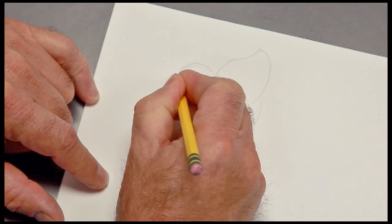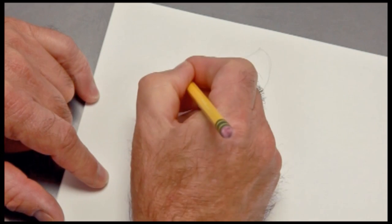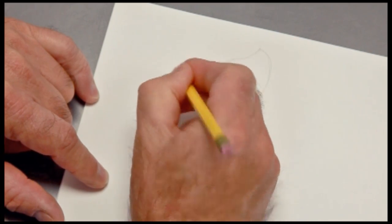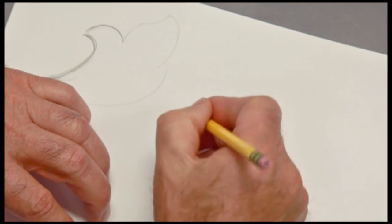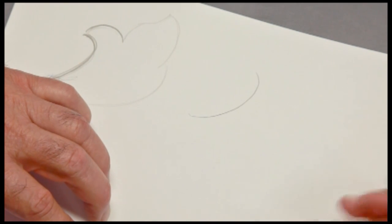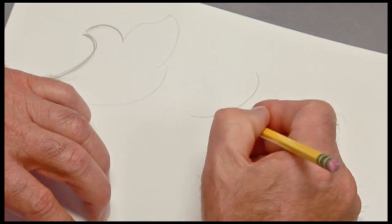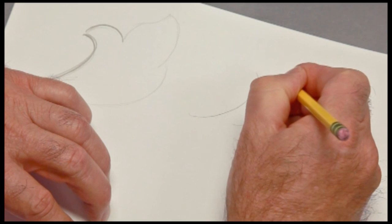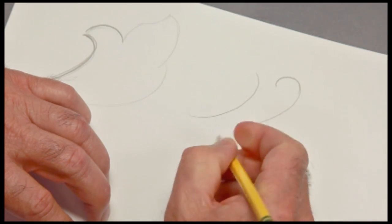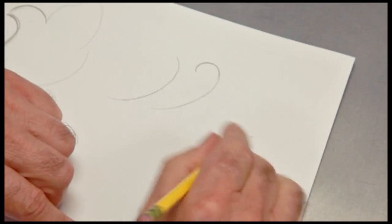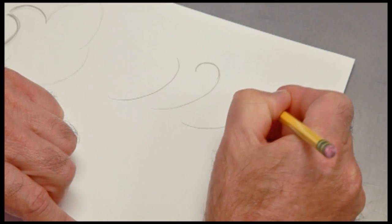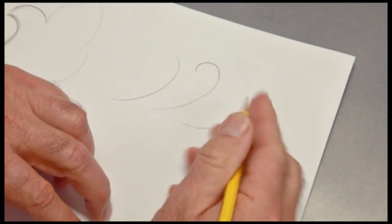Hook lines. This is a hook line. This is what I call a hook line. Hook lines are shaped like this. And they can have a very strong, tight hook at the end, almost like a fish hook. Or they can be a long, lazy, gentle curve like this. They can go in any direction.